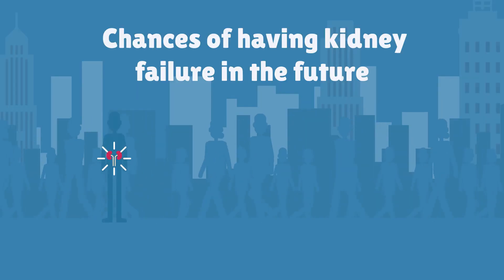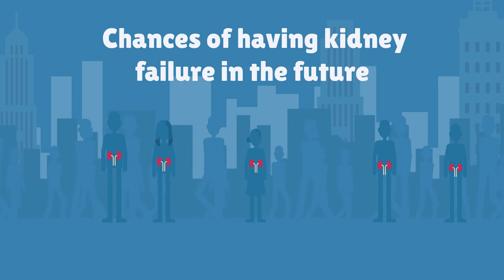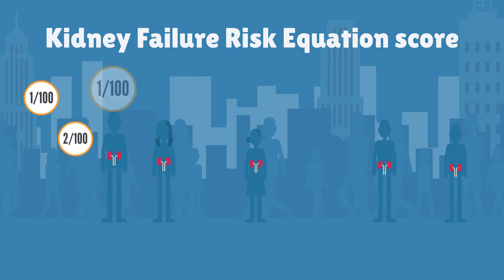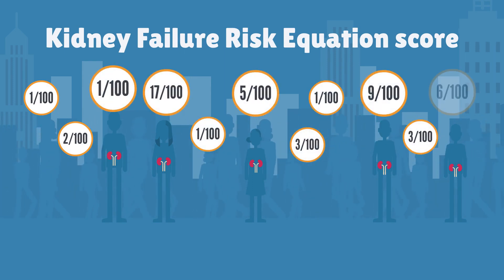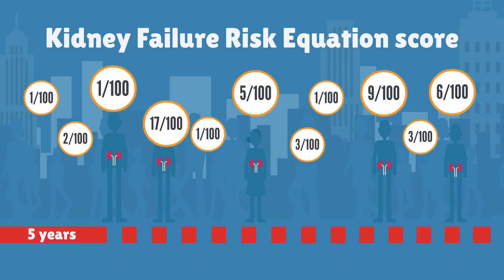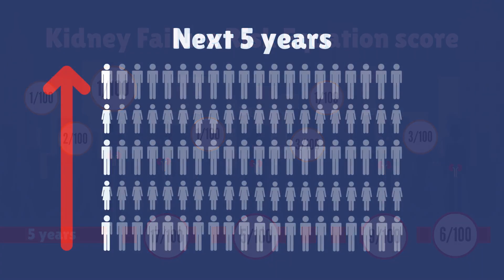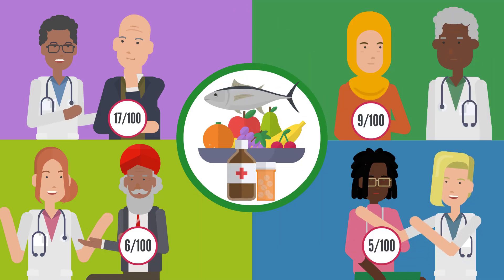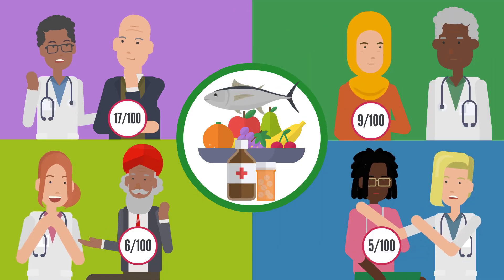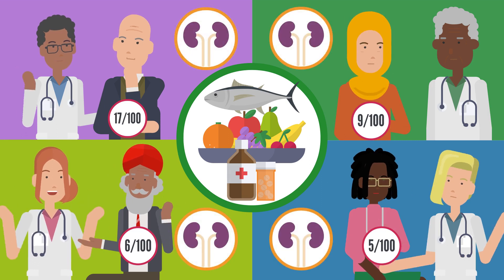It's important to know which people have a higher chance of having kidney failure so they can get the right help. The kidney failure risk equation gives a score of how likely someone is to have kidney failure in the future. If their chance of having kidney failure in the next five years is higher than five in one hundred, they may go and see a kidney specialist. They can discuss making changes to medication and or diet to help the kidney stay healthy.